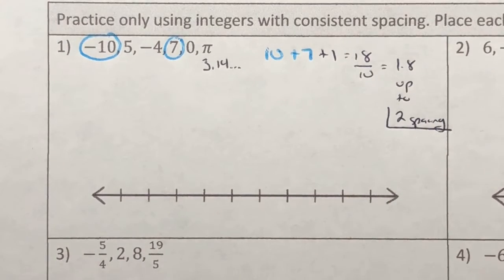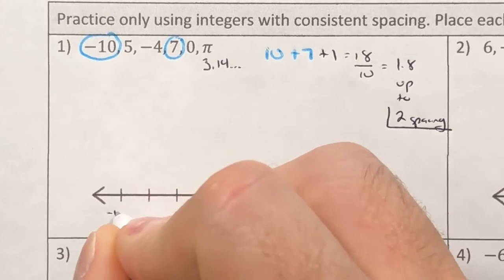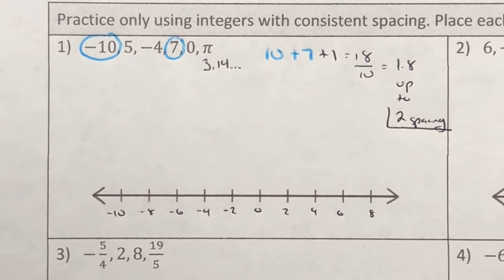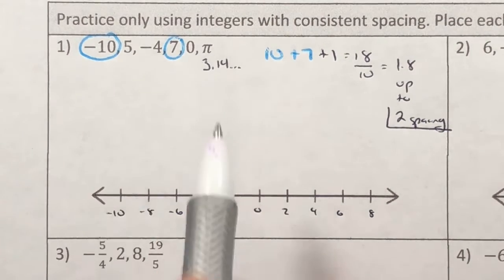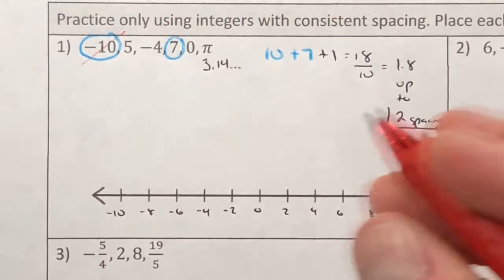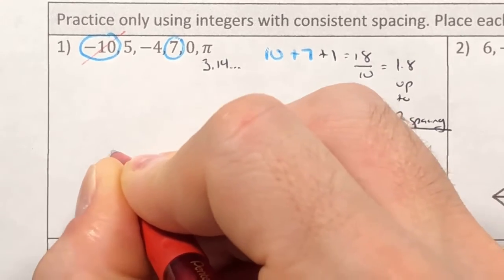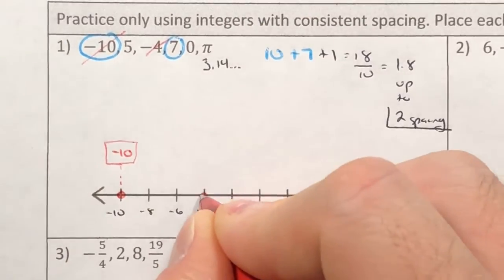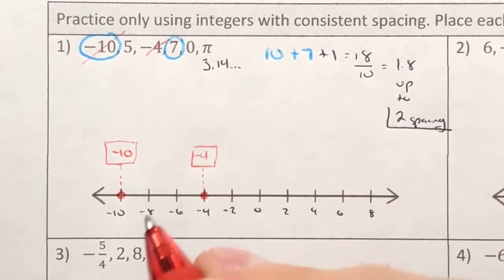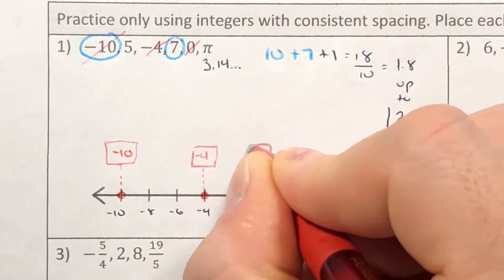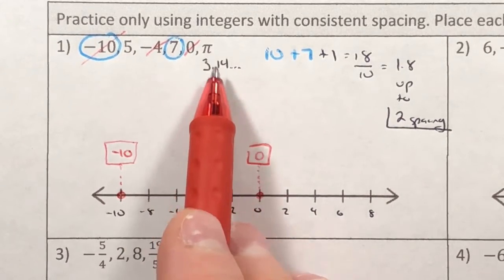So my spacing is going to be valued at 2. I'm going to start at negative 10 and go by 2s: negative 8, negative 6, negative 4, negative 2, 0, 2, 4, 6, and 8. That shows me every number will fit in this range. Now let's place the numbers we know on the number line. Negative 10 has its own spot. Negative 4 is on the number line. Zero is on the number line. But 5, 7, and pi are not on the tick marks.